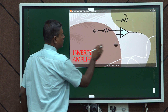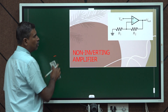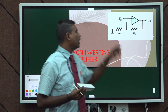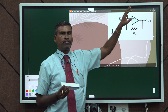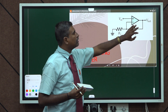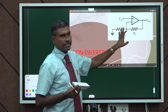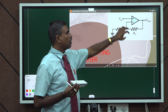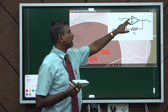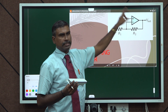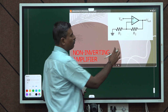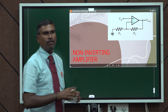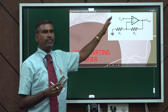Now let us move to the non-inverting amplifier. In the non-inverting amplifier, the input voltage is applied at the non-inverting terminal — that is the third pin of the op-amp. The supply connections remain the same; only the input voltage changes from the inverting terminal to the non-inverting terminal. To obtain the gain formula, we calculate the ratio of V_out to V_in.